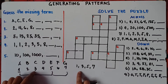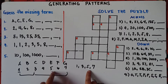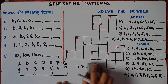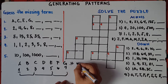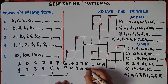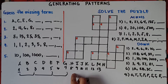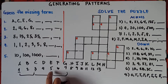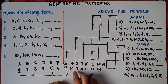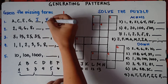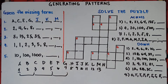So we have A, C which is 3, E which is 5, and G which is 7. The next numbers should be 9, 11, and 13. The pattern is adding 2 each time: 1 plus 2 is 3, 3 plus 2 is 5, 5 plus 2 is 7, 7 plus 2 is 9 which is I, 9 plus 2 is 11 which is K, and 11 plus 2 is 13 which is M. So our answer for number 1 is I, K, M.